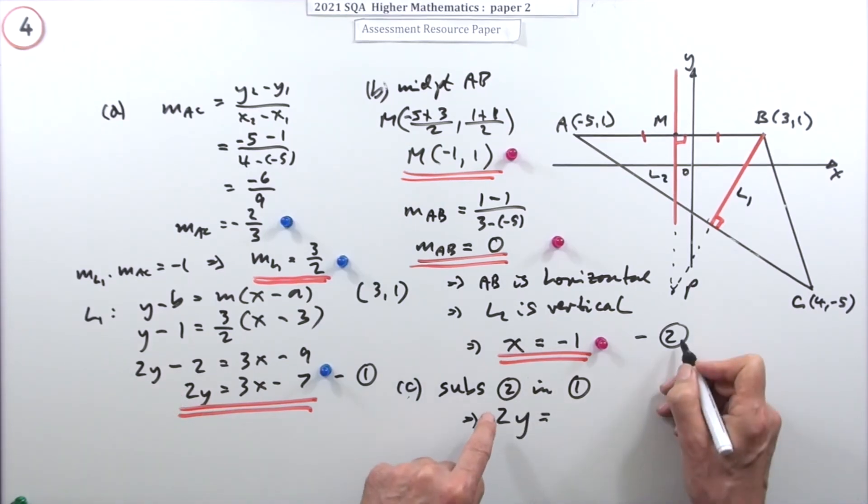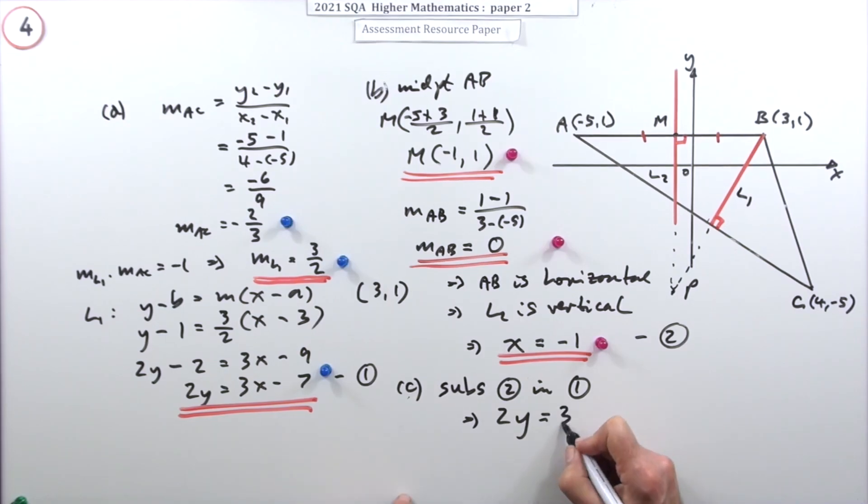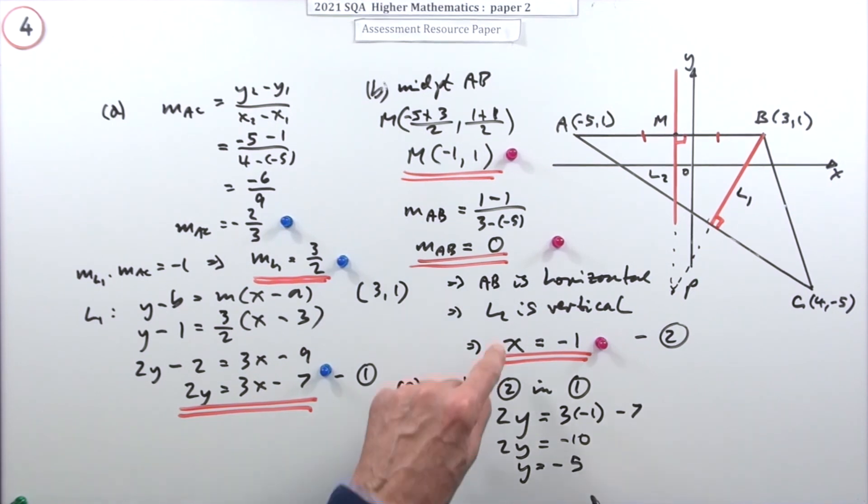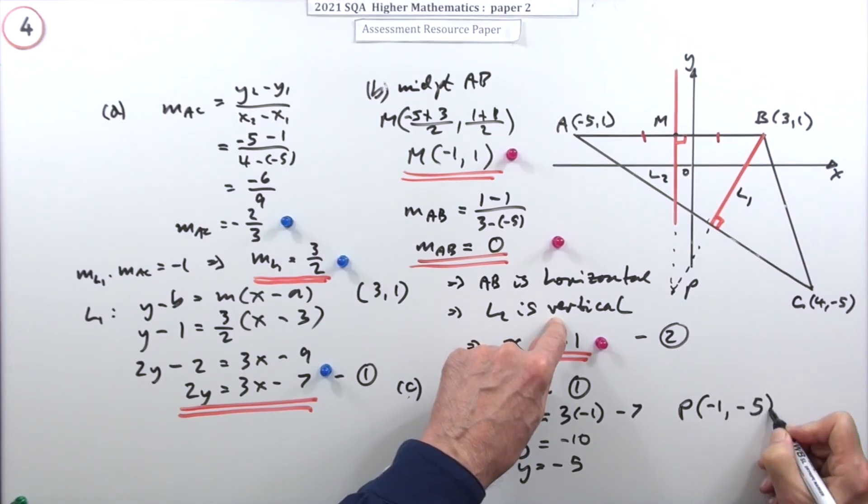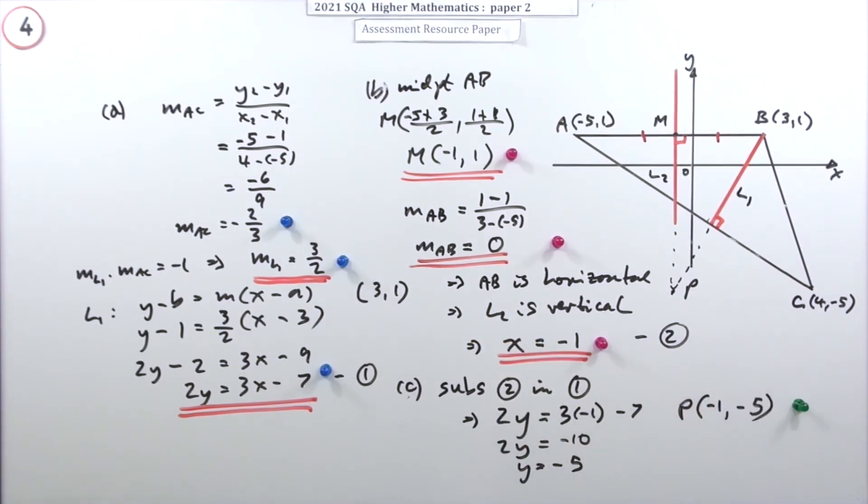In which case this will read - equation 1 will read 2y equals, and that says put x = -1, 3 times -1 take away 7. So 2y = -10, so y is -5, and the x is -1. So that means the point of intersection is (-1, -5) for that mark.